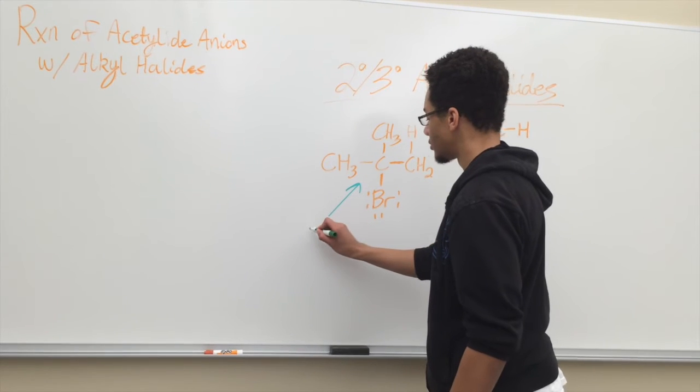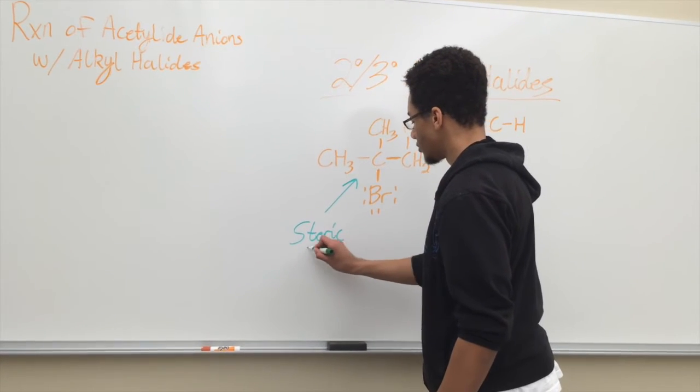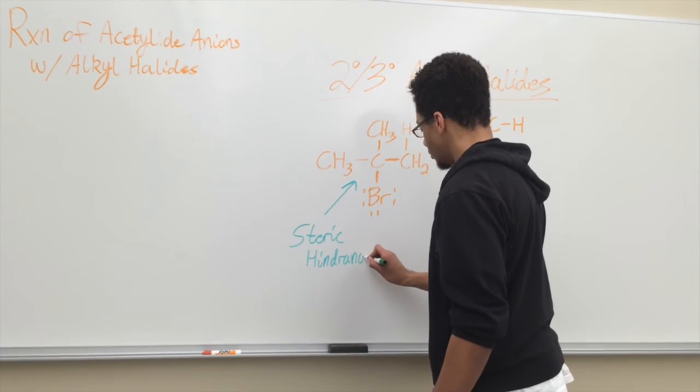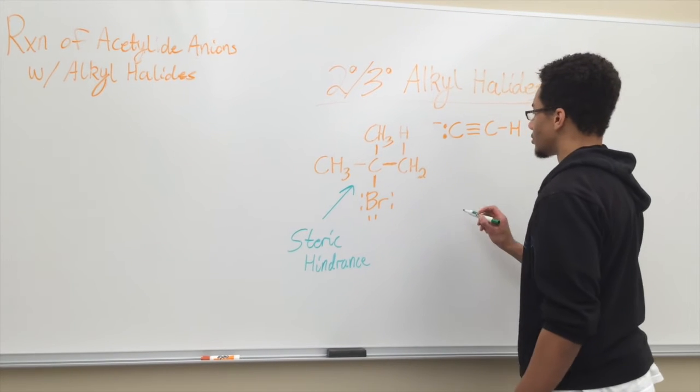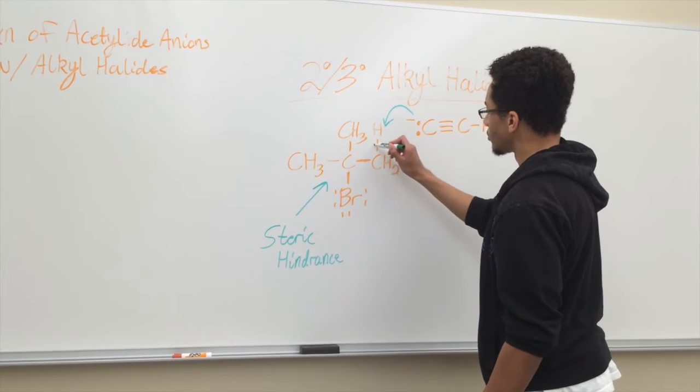We'll be looking at the acetylide anion reactions with secondary or tertiary alkyl halide. Due to steric hindrance, we can only undergo an E2 mechanism here. SN2 mechanisms are not possible, which makes our acetylide anion actually become a base instead of a nucleophile.